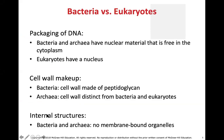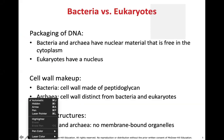Today we're going to talk about the prokaryotic cell. Chapter 4 is going to be broken up into the prokaryotic cell, and for CCP students, the eukaryotic cell as well. For Camden County students, the eukaryotic cell will be found under Chapter 5 of your textbook.